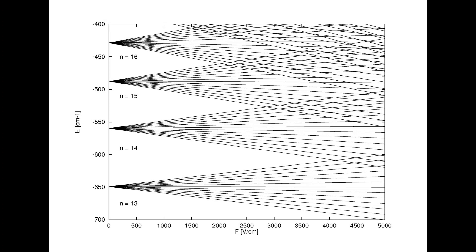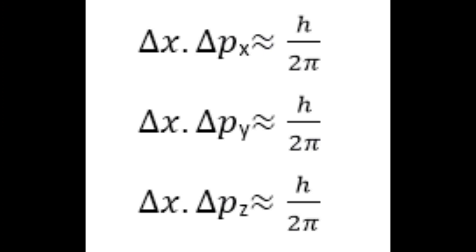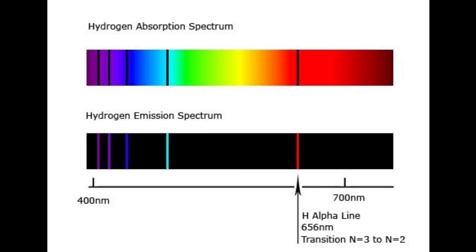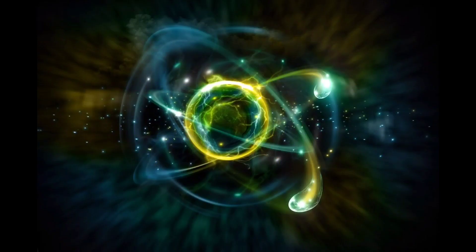3. It violates the Heisenberg uncertainty principle. 4. It could not explain the spectra obtained from larger atoms. So these are the limitations of Bohr's atomic model.